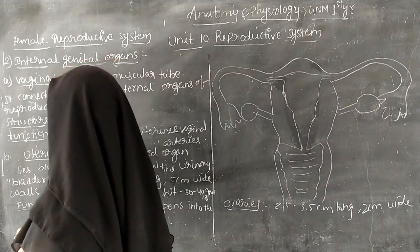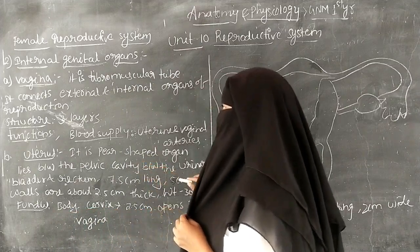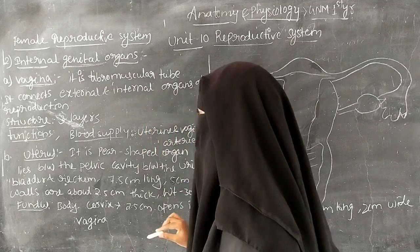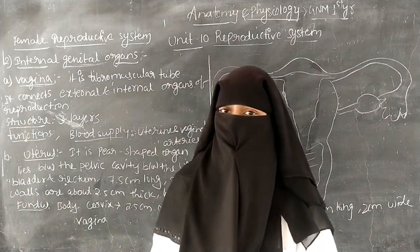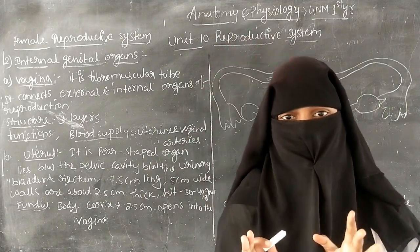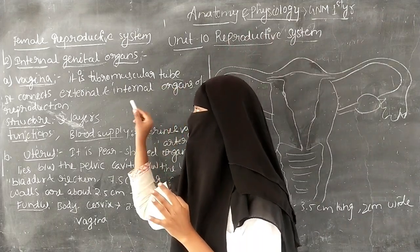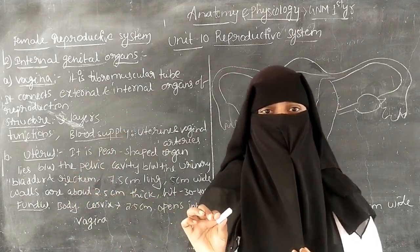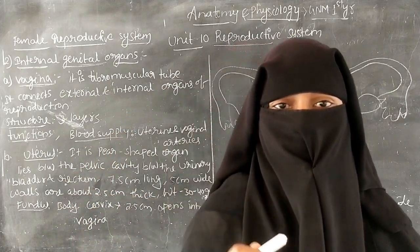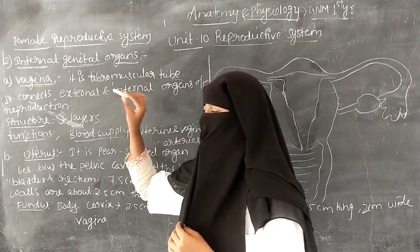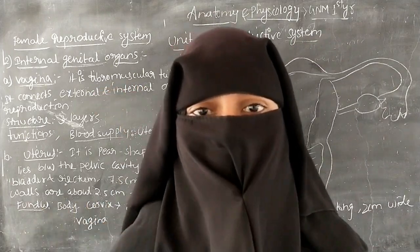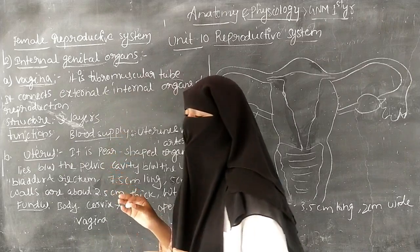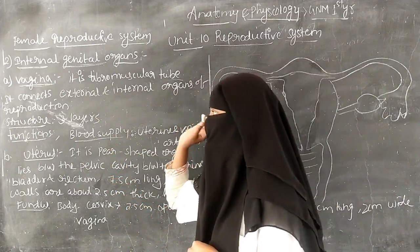The first internal genital organ is the vagina. The vagina is a fibromuscular tube. It connects the external and internal organs of reproduction.